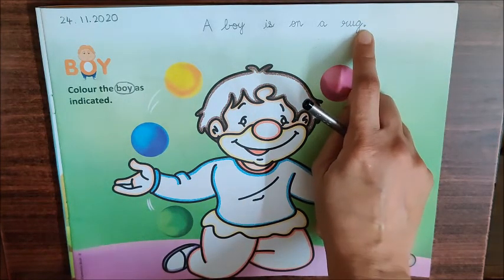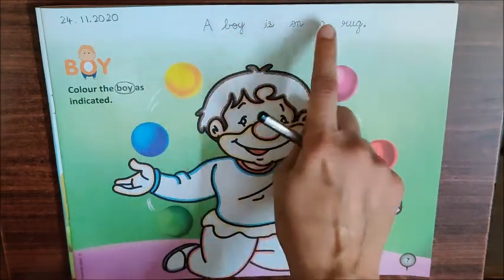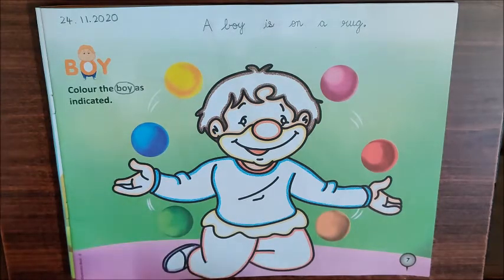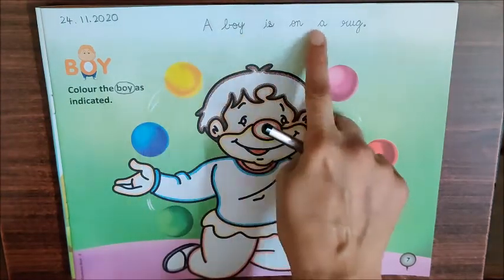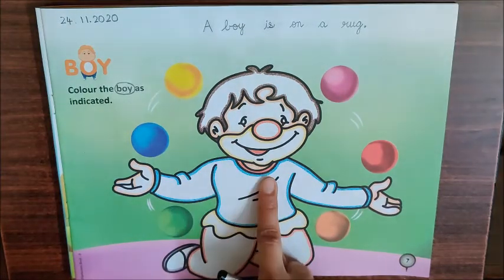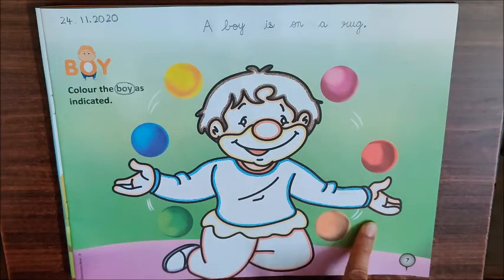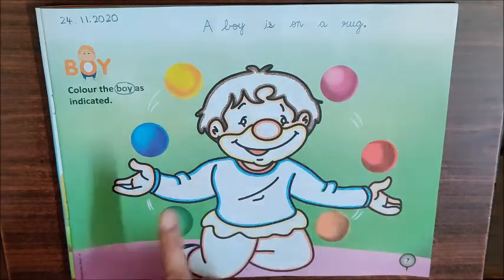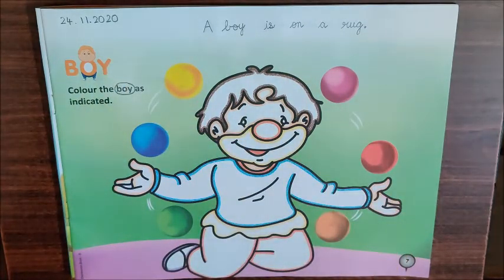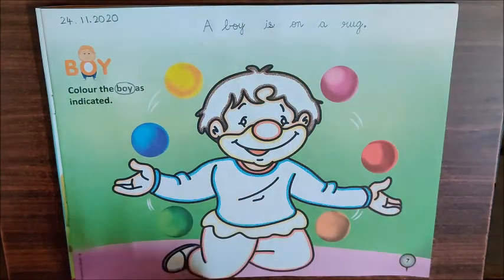Now tell me children, why did I write 'a boy' and 'a rug' here? I have explained this before. Because there is only one boy — do you see more boys in the picture? No. And 'a rug' means there is only one rug, we do not have more rugs here. That is why we have written 'a boy' and 'a rug'.